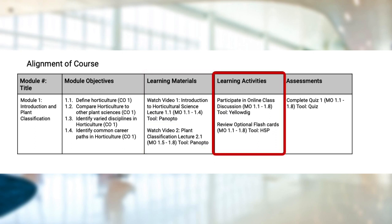The next column is for learning activities, which are things learners will do to build and practice applying knowledge to help them with the learning process. Again, alignment with the module objectives is provided with a numbering system, and the tools with which learners are expected to complete the activities are indicated as well.